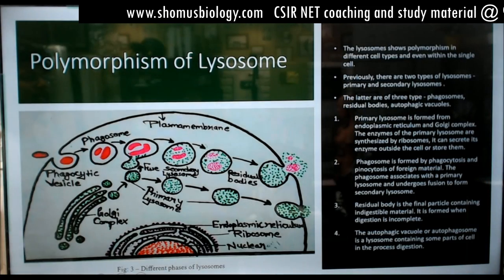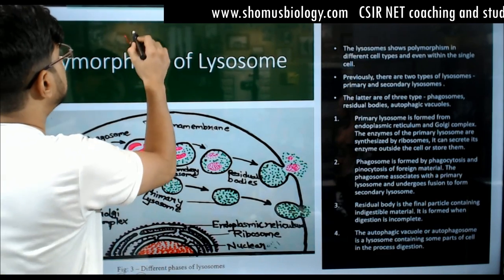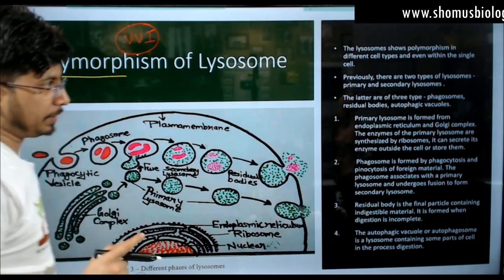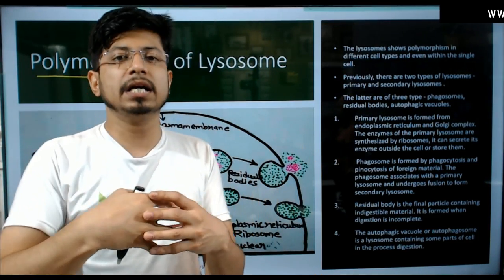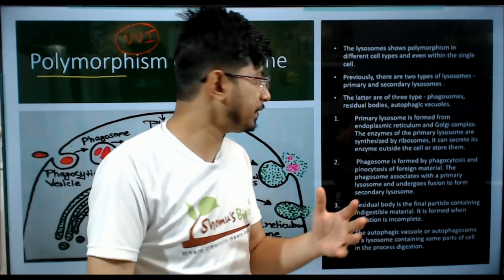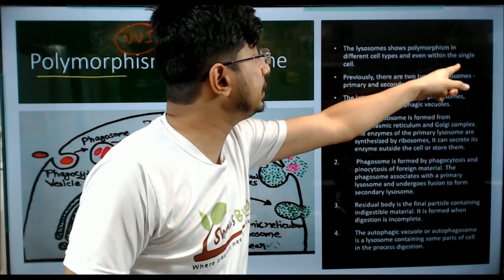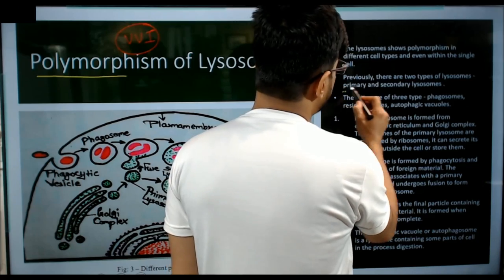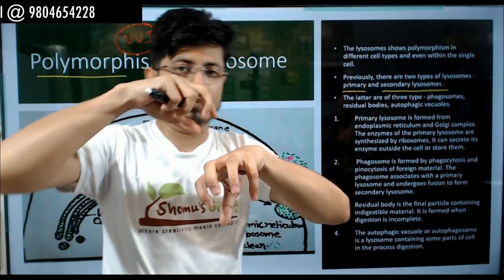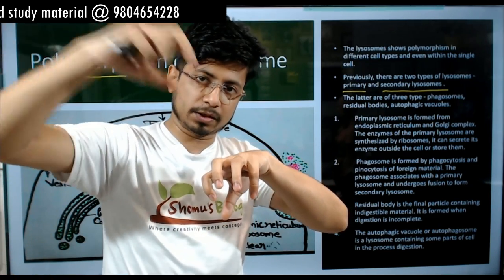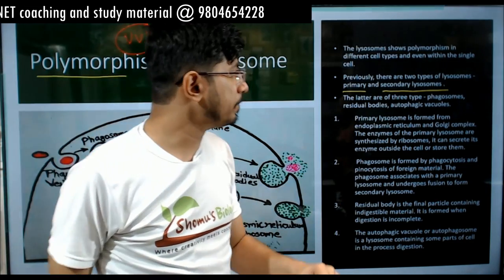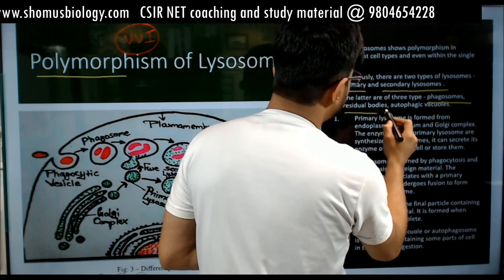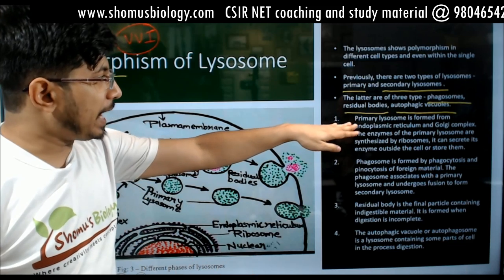Lysosomes show polymorphism, which is the most important concept to understand about them. Lysosome is not a unified single structure; it has modifications and different names at different stages. Polymorphism occurs in different cell types and even within a single cell type. We now describe three types based on their developmental chronology: primary lysosomes, phagosomes (secondary lysosomes), residual bodies, and autophagic vacuoles.